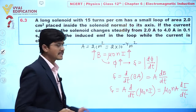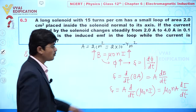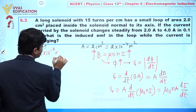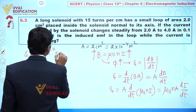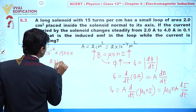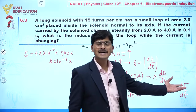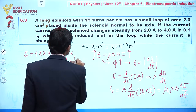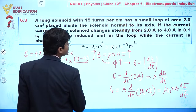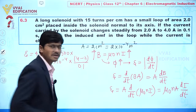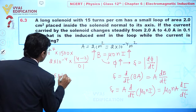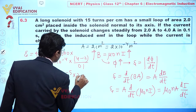Substituting values: μ₀ = 4π × 10⁻⁷, n = 1500, area A = 2 × 10⁻⁴, and dI/dt = (4 − 2) / 0.1 = 20. So e = 4π × 10⁻⁷ × 1500 × 2 × 10⁻⁴ × 20.